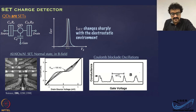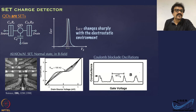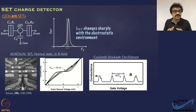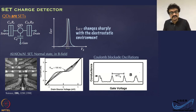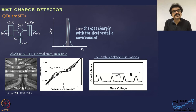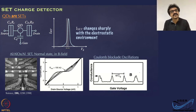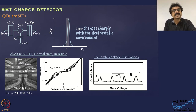Single electron transistors are basically quantum dots. Usually, when we say single electron transistor, those are always large quantum dots where you observe Coulomb blockade. The term quantum dots is generally reserved for systems where you see single particle levels. Quite often, single electron transistors refer to charge sensing quantum dots, and quantum dots refers to the system where you are studying the dynamics of the charges.